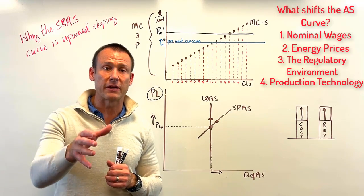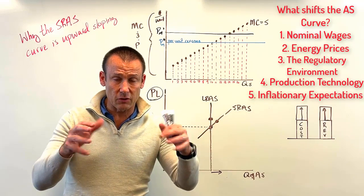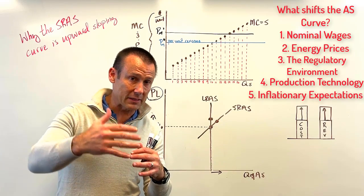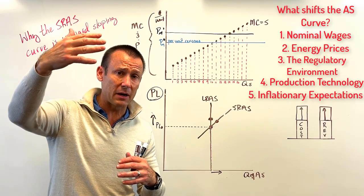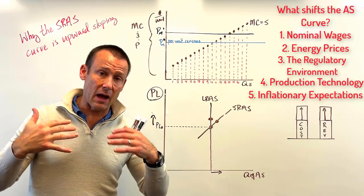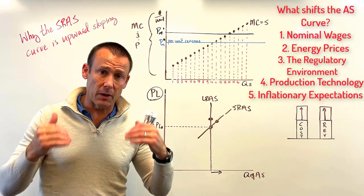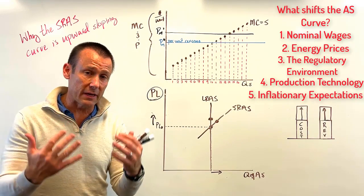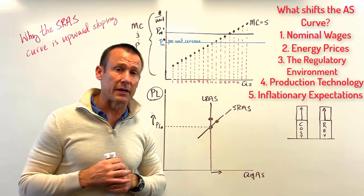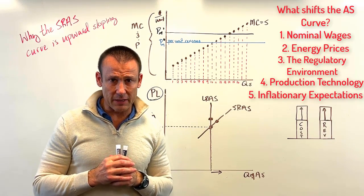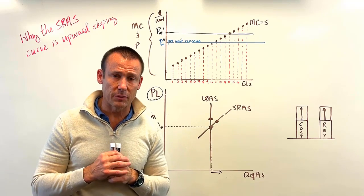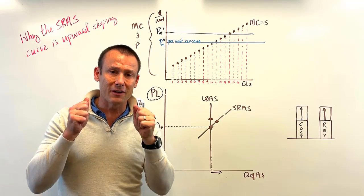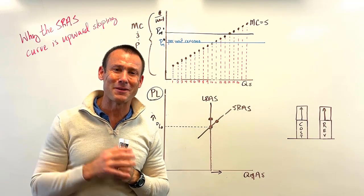Finally, inflationary expectations. If inflationary expectations go up, workers are going to agitate for higher nominal wages, because if we think the price level is going to go up by more in the future, we need our real wages to keep up — so nominal wages need to rise proportionally. Those wage changes cause aggregate supply to change. What shifts the aggregate supply curve is a change in the cost of production — costs that are ubiquitous in our economy.